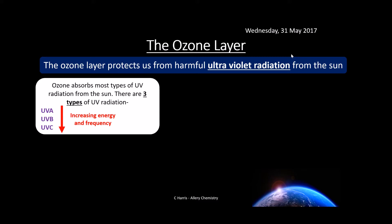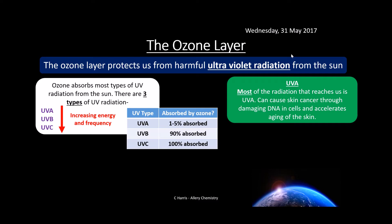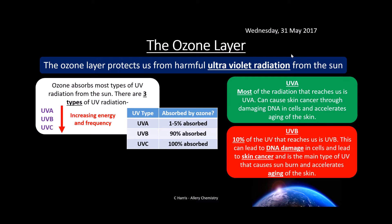UVC is the worst UV radiation in terms of damage to humans. UVA — only 5% is absorbed by the ozone layer. UVB — 90% is absorbed. UVC — 100% is absorbed, so thankfully if the ozone layer is there it will absorb all of the really harmful UVC radiation. UVA, which makes up most of the radiation that reaches us, can cause skin cancer by damaging DNA in the cell and accelerating the aging process.